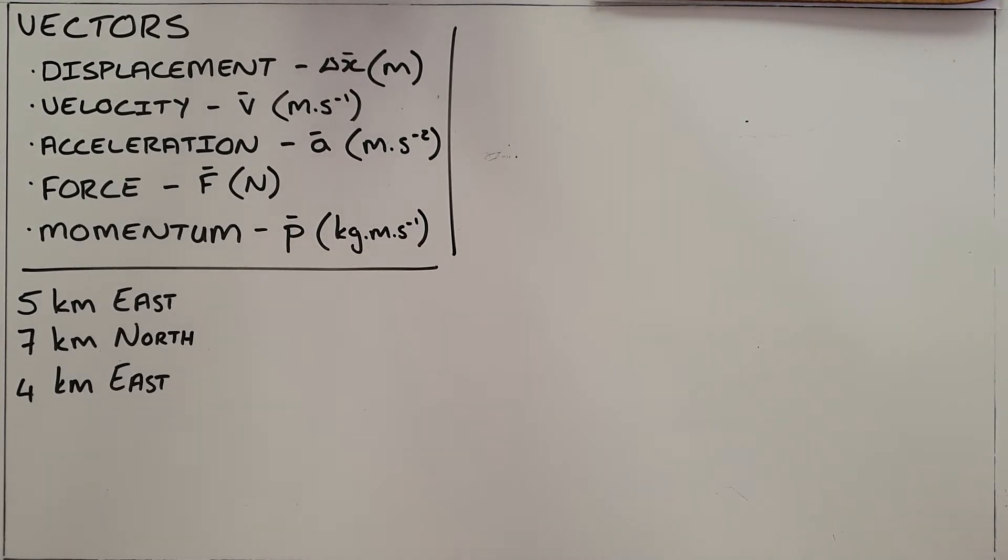Now vectors have a number of unique properties. The first one is that vectors can be added together in any order. If we look at the example here of somebody who has moved or traveled five kilometers east, then seven kilometers north, and then four kilometers east, there are three different ways in which we can show this.